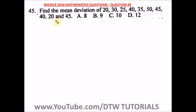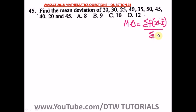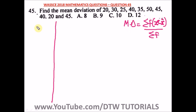Question 45 of the 2018 WAEC mathematics past question. Find the mean deviation of this set of numbers. The formula for mean deviation is: summation of frequency times the absolute value of (x minus the mean), divided by the summation of the frequency. First, we need to find the mean. Let's use a table method.